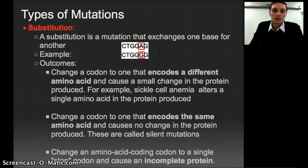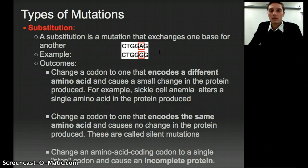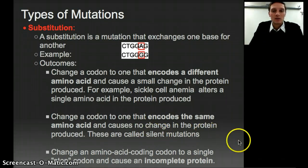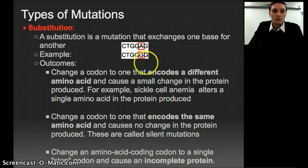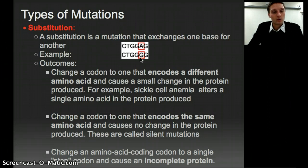A substitution can have a few different outcomes. We can change a codon to one that encodes a different amino acid, causing a change to the protein. We could change a codon to one that encodes the same amino acid, which would have no overall effect on the protein — this is called a silent mutation, because the organism won't notice any change. The third outcome is a change from an amino acid coding codon to a stop codon, which could cause an incomplete protein — the protein would be cut short.